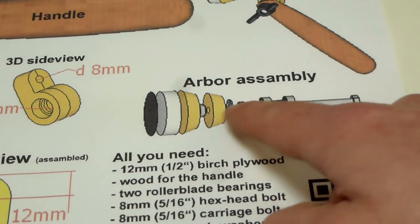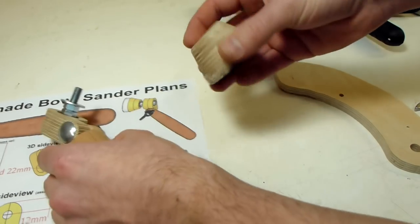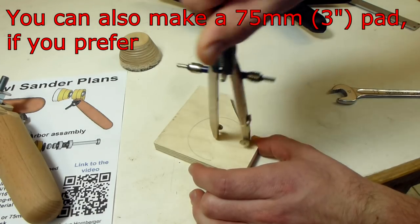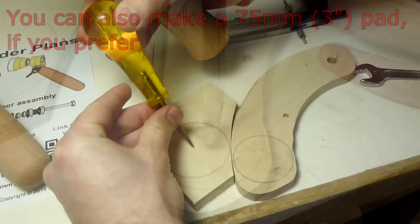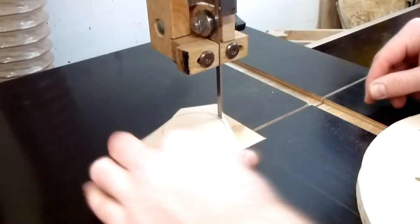While the glue dries I can work on the arbor. First thing to make here is the sanding pad. Draw a 50mm circle and another circle slightly smaller than the first one on some more plywood. Mark the center and cut out the circles a little oversized.